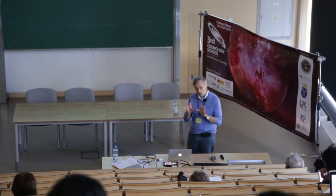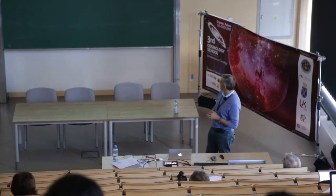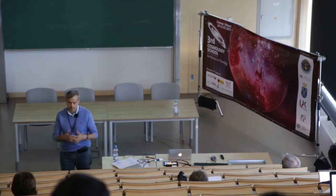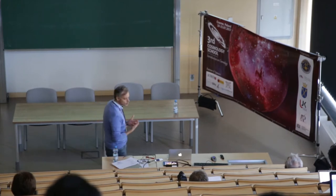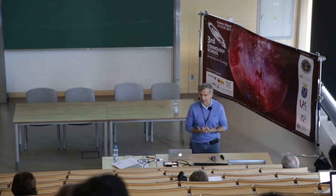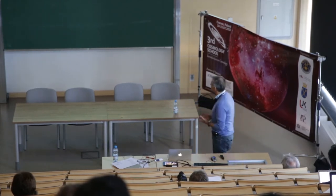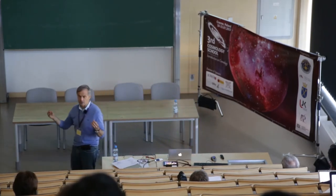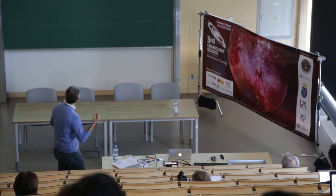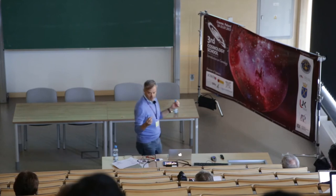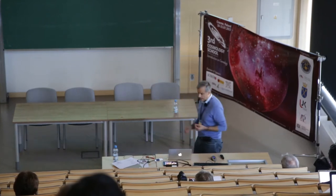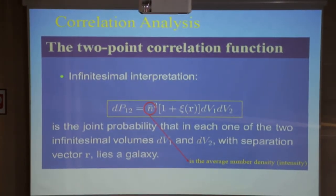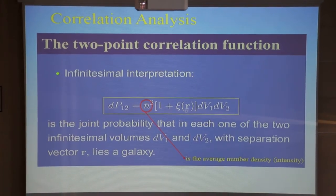Now we focus on the mathematical aspect of the statistics of the galaxy distribution. The main measure of galaxy clustering that many of you already know is the two-point correlation function. The two-point correlation function is defined as the joint probability that in two separate infinitesimal volumes dv1 and dv2, we find a galaxy in each of them. The important thing is that we are dealing with the separation of these two volumes - the vector separation is the key quantity.